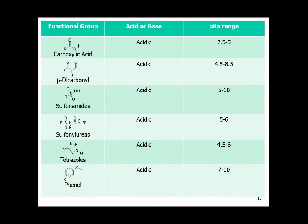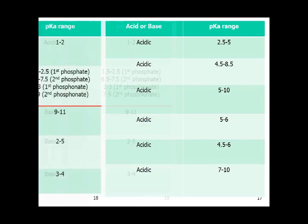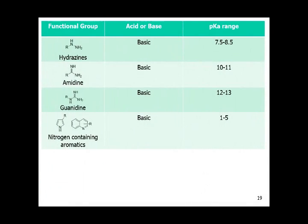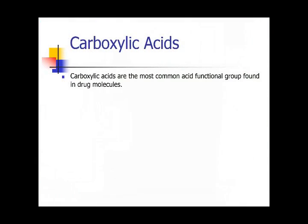At the end of part one, I gave a list of various functional groups that you are responsible for knowing and their corresponding pKa values. Here is just a sampling of them — these are by far the most abundant. You can clearly see where the red line separates the acids from the bases. So let's delve deeply into the acids.